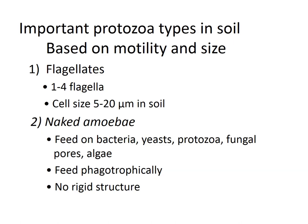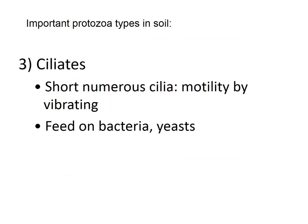Other protozoa types include flagellates, which can have one to four flagella and range from 5 to 20 micrometers in size. Naked amoeba feed on bacteria, yeast, protozoa, fungi, and algae phagotrophically and lack a rigid cell wall. Ciliates are known for having short, numerous cilia that aid mobility through vibration, and they often feed on bacteria and yeast, thereby lowering the microbial population of bacteria.